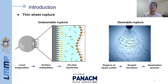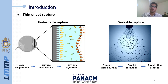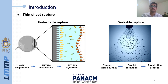The rupture may be desirable or not. The rupture of the surface film that coats the human eye may lead to undesirable clinical conditions such as dry eye syndrome, which makes it undesirable. On the other hand, the rupture of a liquid curtain into small liquid droplets is desirable in industrial applications such as the atomization process, as presented by the right figure.